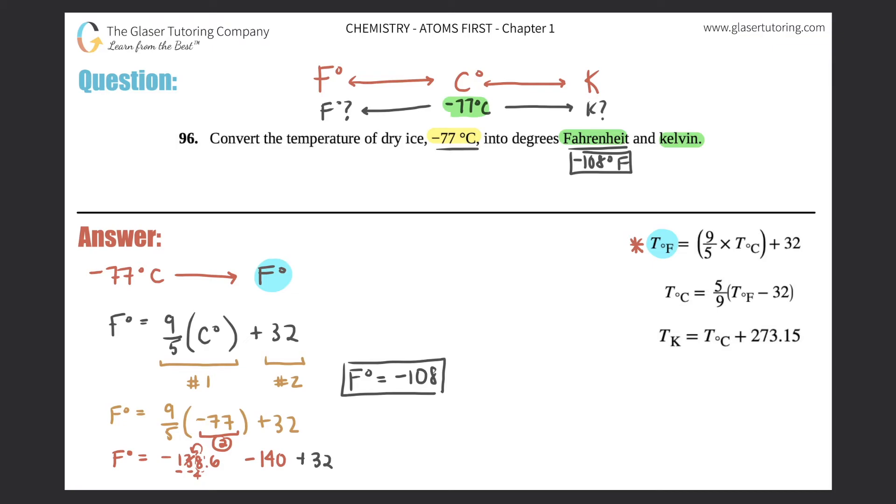Okay, now the second part. We got to use the same number, the Celsius, to convert to Kelvin. So now I'm going from Celsius to Kelvin. Which formula do I use? I want to get to Kelvin, so it's this one right. Kelvin equals Celsius plus 273.15.